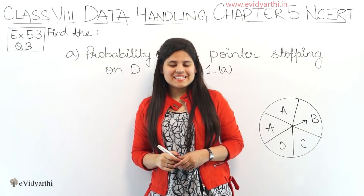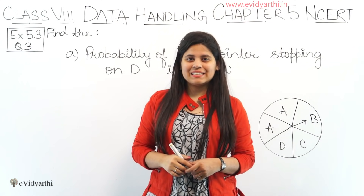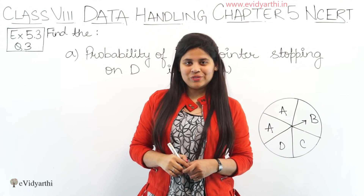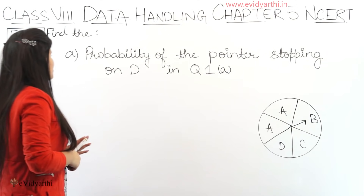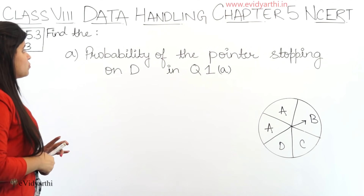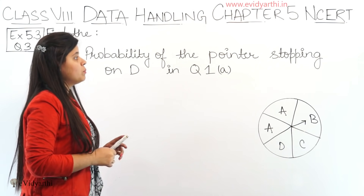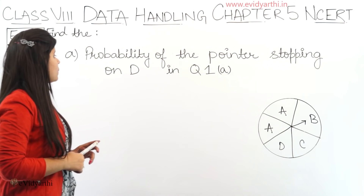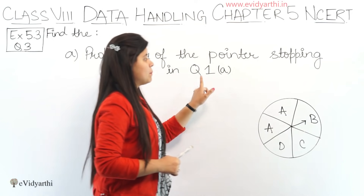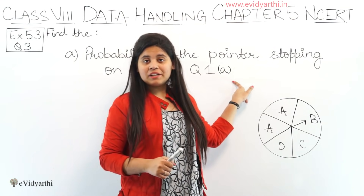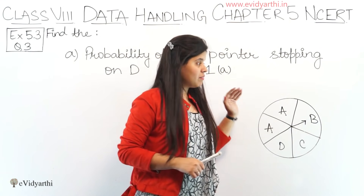Hello guys, this is Manzi from AVTHADI-Charts. We are coming to question number 3, exercise 5.3. So in this question we have the first part: probability of the pointer stopping on D. This is from the reference, question number 1, A part.